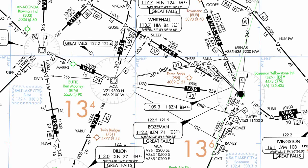Hi everyone, this is Will with KL Aviation. In this lesson we're going to look at charted IFR altitudes on an en route low altitude chart. Here we have en route low altitude chart number 13, and we've zoomed in just south of Helena, Montana into some mountainous terrain, which will give us a good view of most of the types of altitudes we can expect to find on a low altitude chart.